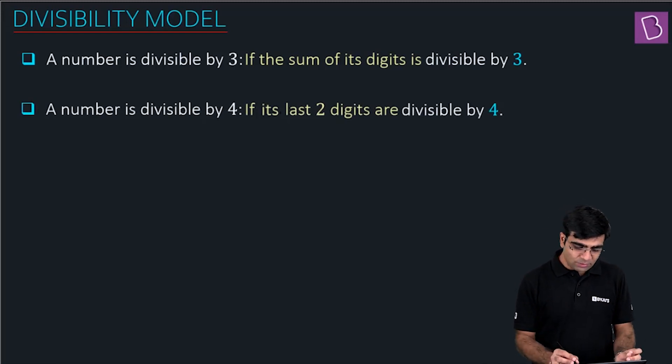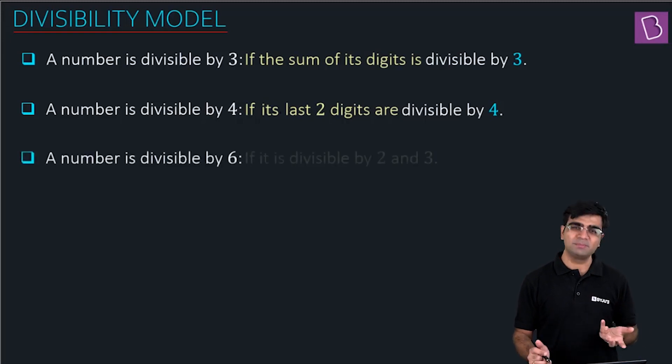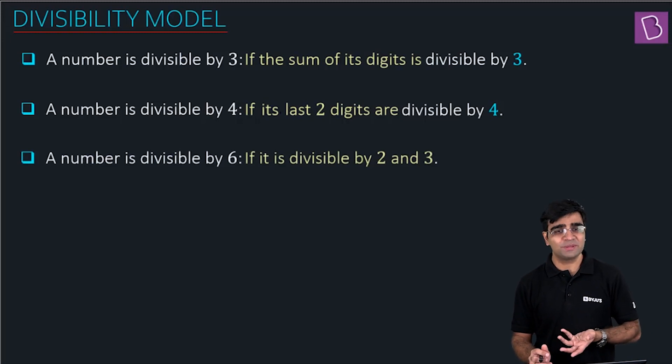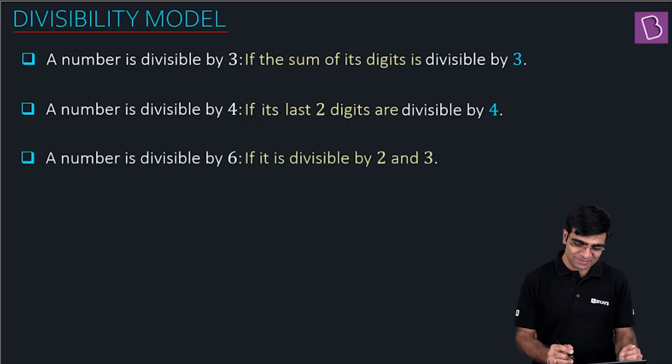When I talk about divisibility by 6, it's very simple — the number has to be divisible by 2 as well as 3. That's it.